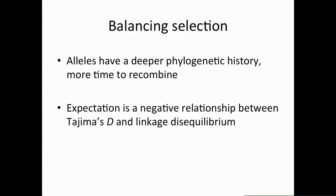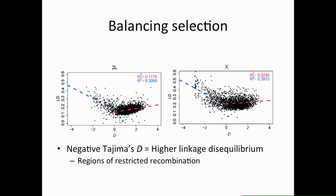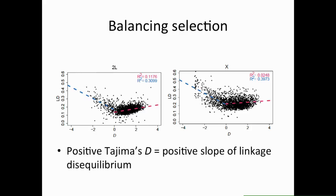If it were balancing selection, the alleles would have a deeper phylogenetic history and more time to recombine, so you'd expect a negative relationship between Tajima's D and linkage disequilibrium. In regions of negative Tajima's D we see higher linkage disequilibrium, which makes sense, and those points are mostly from regions of restricted recombination. However, in the case of balancing selection you'd expect that trend to continue, but in regions of positive Tajima's D there is actually a positive slope of linkage disequilibrium, which is not consistent with balancing selection.